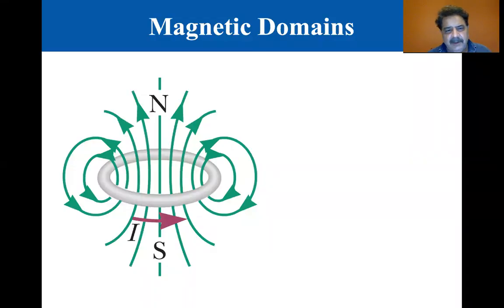You can see the current going around a coil produces a magnetic field. Let's imagine a little electron in an atom spinning around, orbiting around its orbit